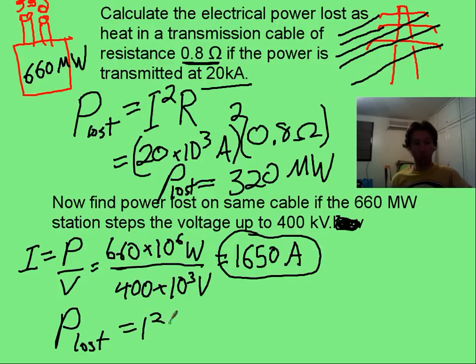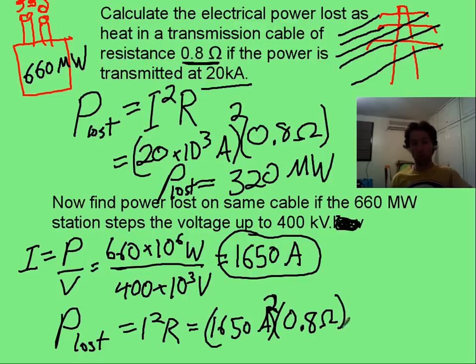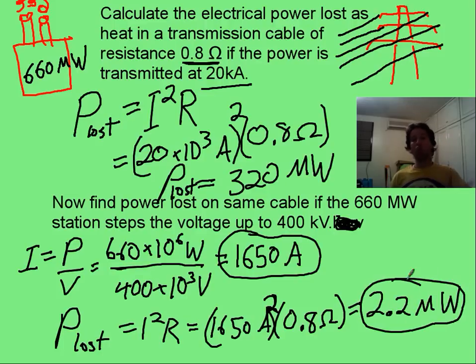And then the power lost, same equation, I squared R. Plug in your current, and then you've got your resistance same as before of only 0.8 ohms, and you are going to get only about 2.2 megawatts, which is much nicer. Still you'd like to have even less, but hey, it's the best we can do.